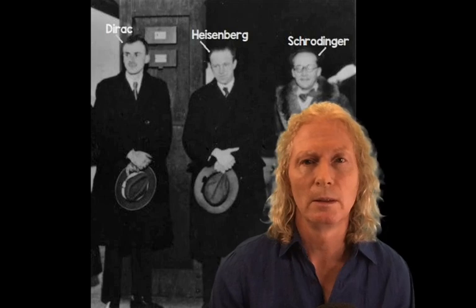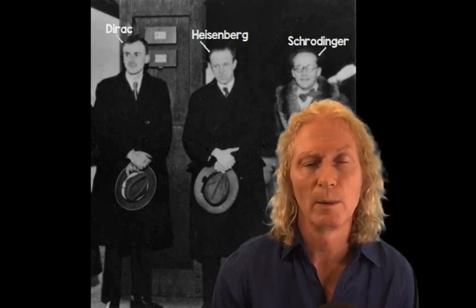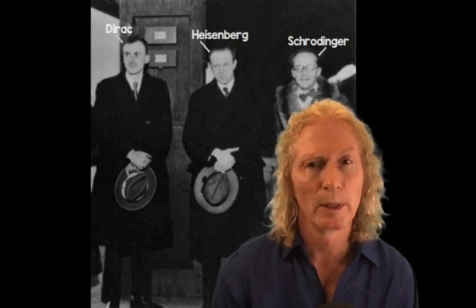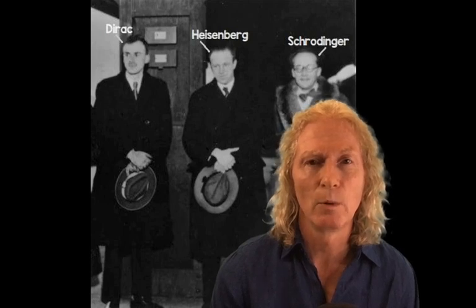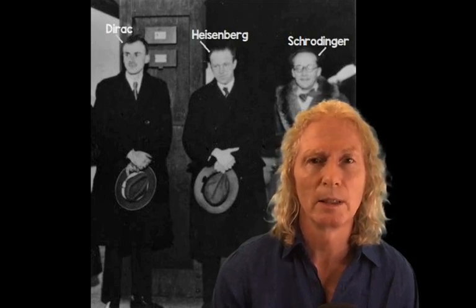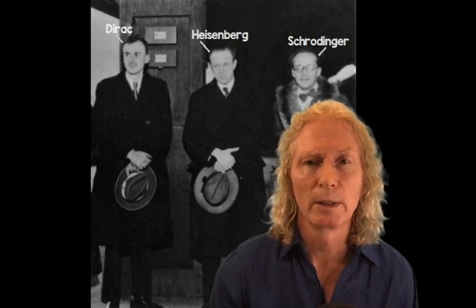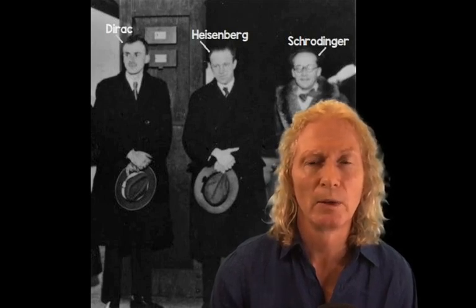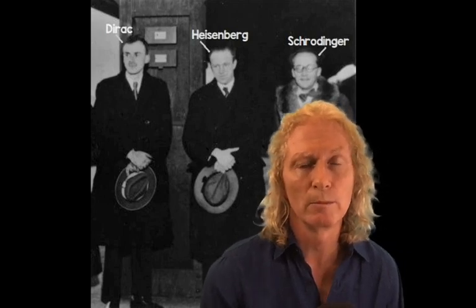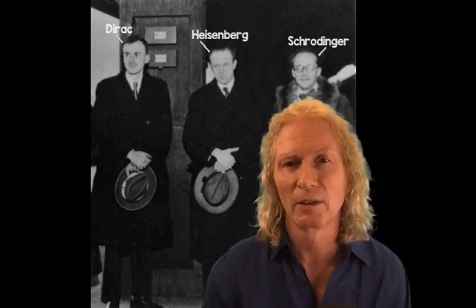Now, the man on the right is Erwin Schrödinger. Schrödinger is famous for the Schrödinger equation. That was the equation shown at the upper left at the beginning of this video. The Schrödinger equation, in some sense, you could view as a quantum mechanical version of Newton's second law from classical mechanics.